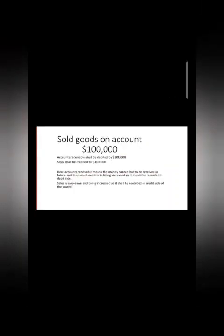Example three: 'Sold goods on account, $100,000.' Accounts receivable shall be debited by $100,000 and sales shall be credited by $100,000. Accounts receivable means money earned but not yet received — it is an asset being increased, therefore it shall be debited. Sales is a revenue and income is being increased, therefore increase in revenue shall be credited.